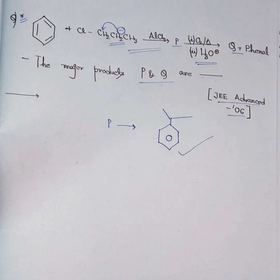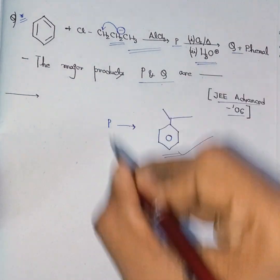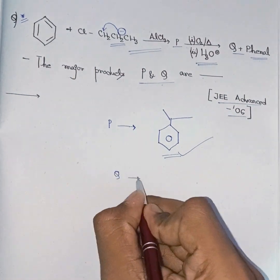In this formation, here is a cumene, and after this cumene reaction, the two products are formed: one is phenol and the Q product should be this.